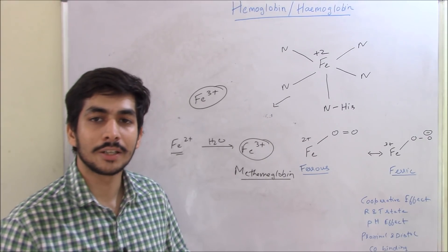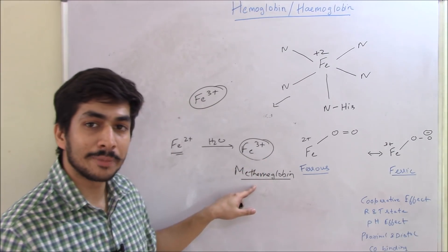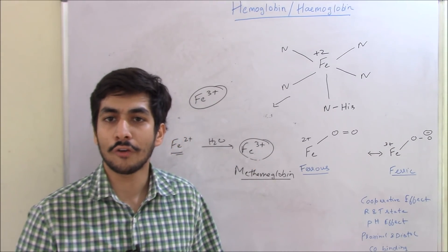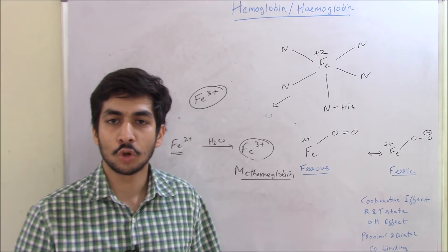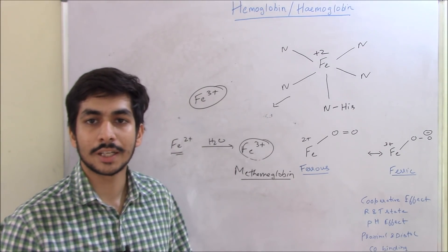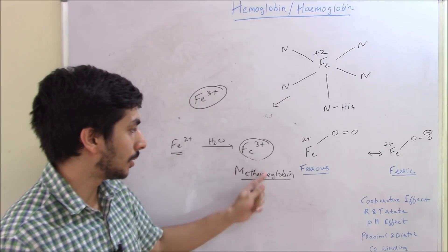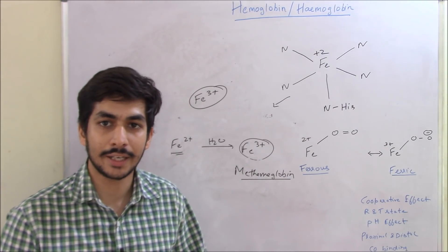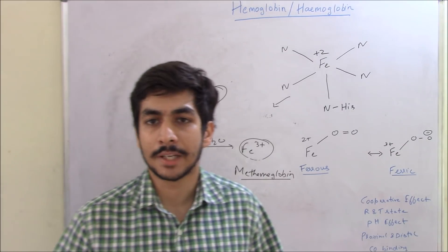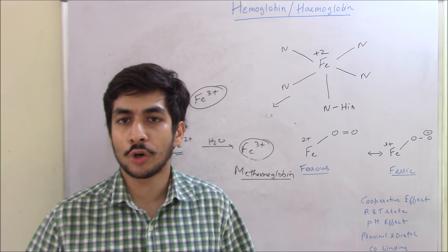There is an enzyme in your body called methemoglobin reductase which reduces Fe3+ back to Fe2+. Some individuals have a low level of methemoglobin reductase, so methemoglobin builds up because the enzyme that reduces Fe3+ to Fe2+ is insufficient, leading to a serious disease. This is the significance of bio inorganic chemistry. In coming videos I'll also be talking about myoglobin, hemocyanin, hemerythrin, and other bio inorganic structures.